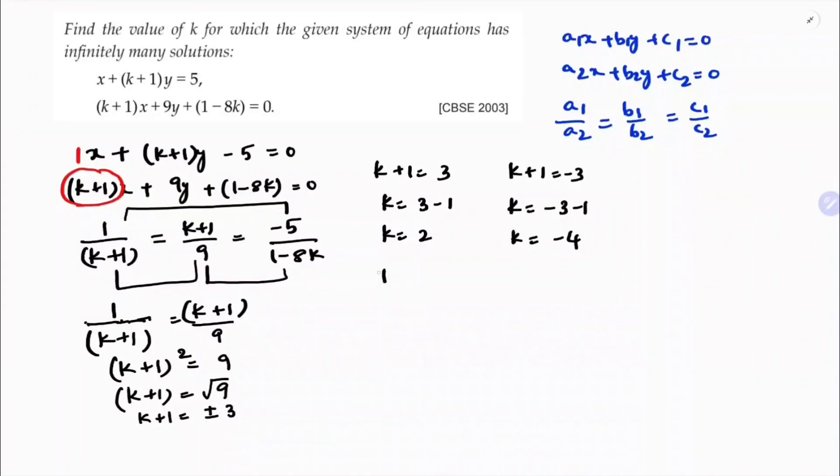First, if k equals 2: 1 by (2+1) equals (2+1) by 9 equals minus 5 by (1-8×2). So 1 by 3 equals 3 by 9 equals minus 5 by minus 15. So k equals 2 is satisfying because 1 by 3, here also we have 1 by 3, here also we have 1 by 3.